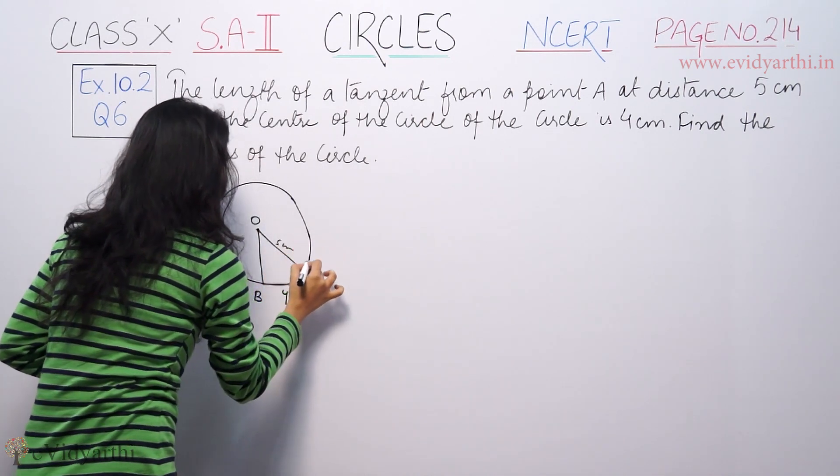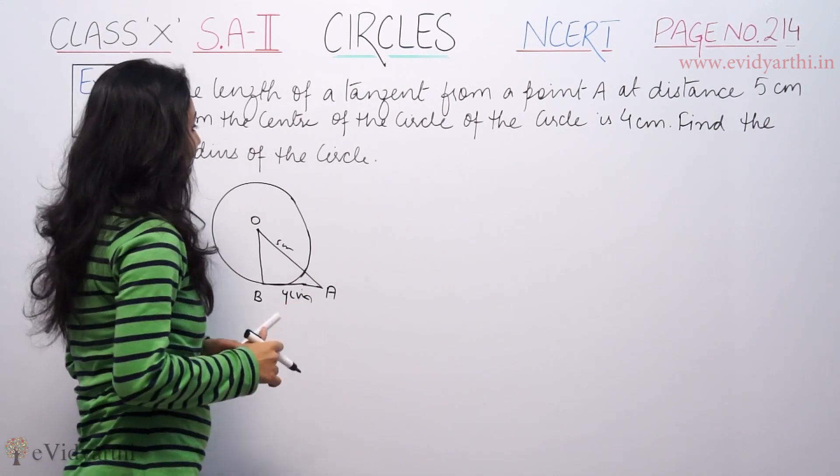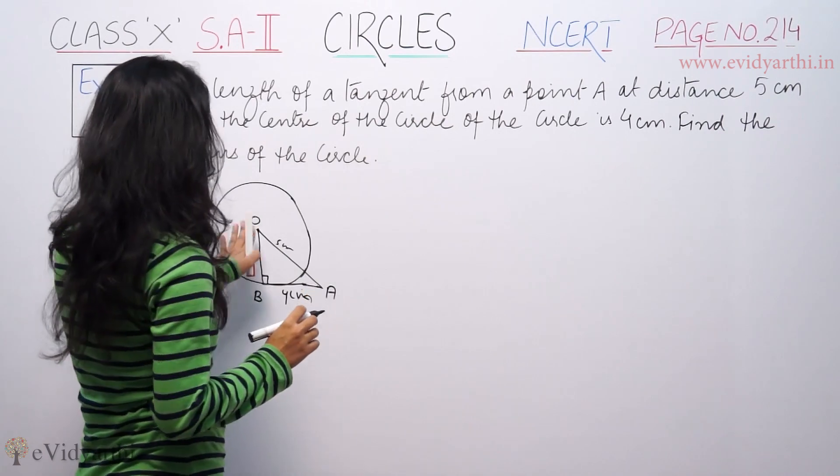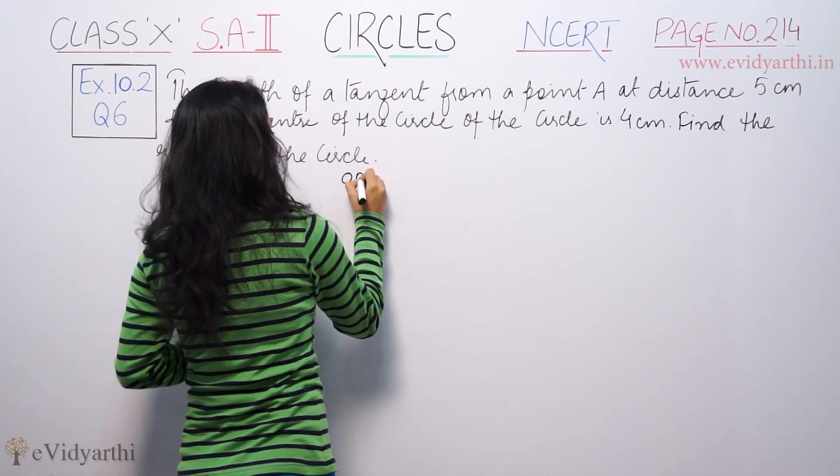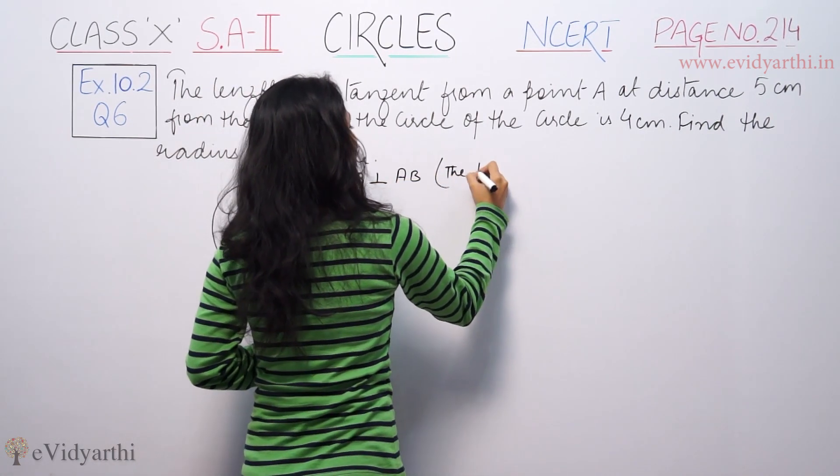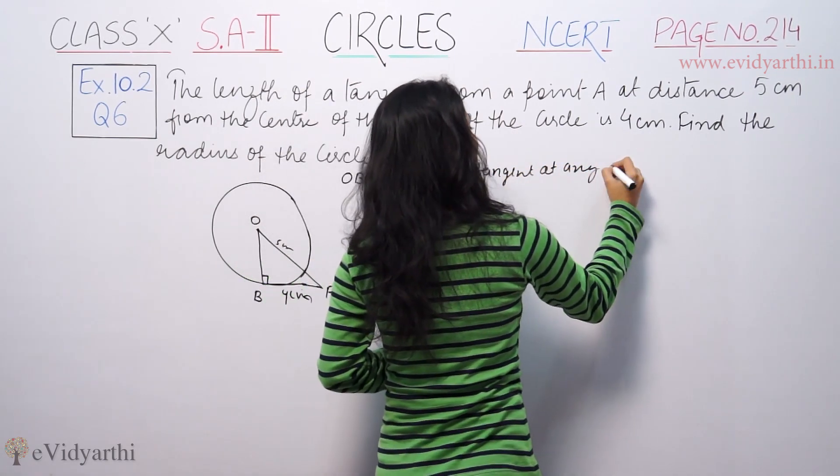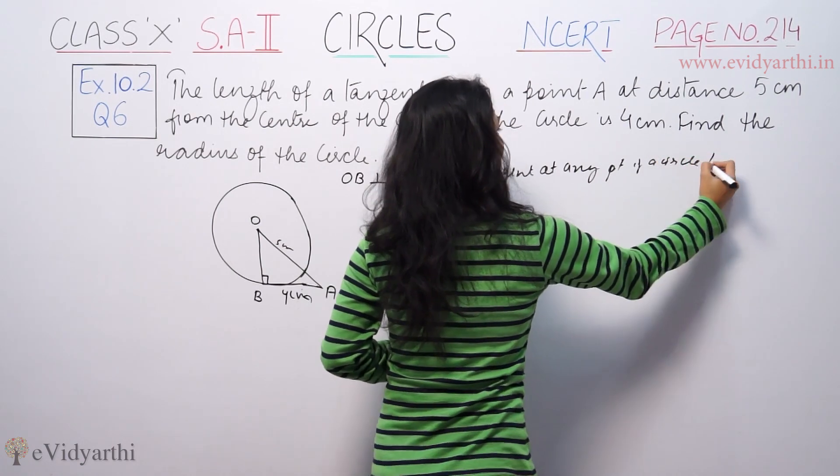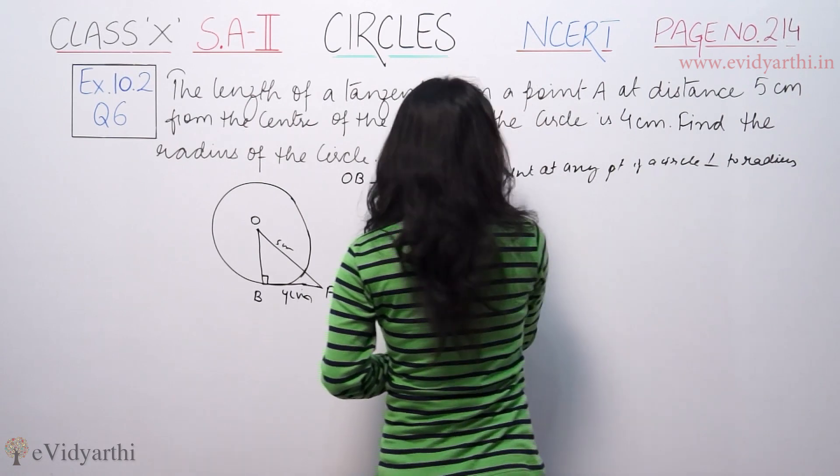This is 5 cm and this point A. This is perpendicular, the tangent at any point of a circle is perpendicular to radius at the point of contact.